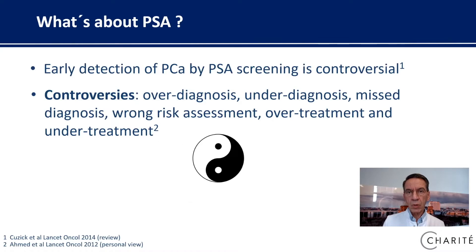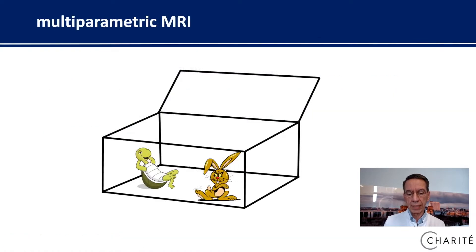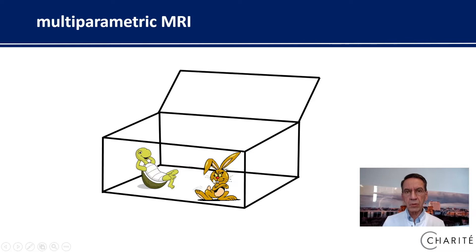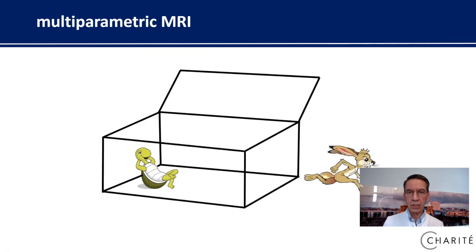So what can we add with multiparametric MRI? We can differentiate between the low-grade prostate cancer which just sits in the prostate and doesn't cause any harm to the patient. However, we are able to detect the aggressive tumor hopefully before the tumor is jumping out of the prostate and causing distant metastasis. And diffusion-weighted imaging is very helpful in this task.